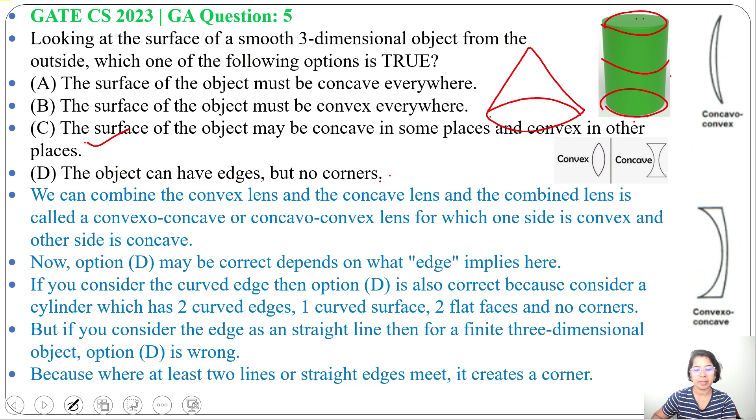The surface of the object may be concave in some places and convex in other places. It may be a combination of both, concave and convex. If this lecture is helpful for you, please like, share and subscribe. Thank you.